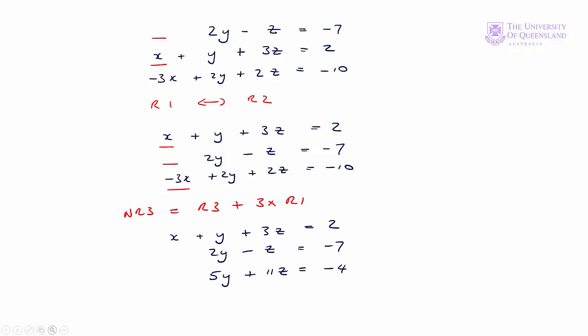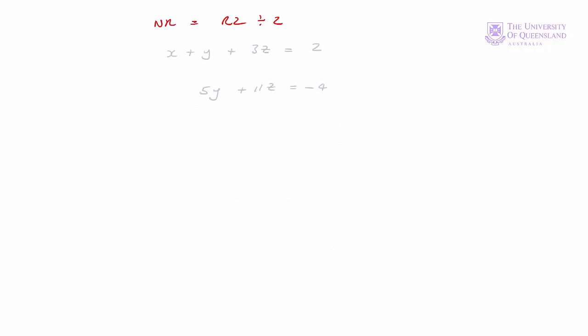Now we have the x's sorted out. Our next operation will be to get a coefficient of one for y in the second equation. We'll do that by dividing equation two by two: new row two equals row two divided by two. Equations one and three remain unchanged. So we'll have y minus one half z equals minus seven on two. Our next step is to get a zero for the coefficient of y in the third equation. We'll subtract five times equation two from equation three.